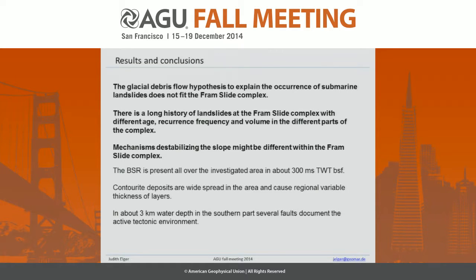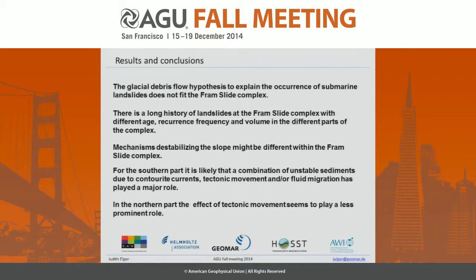Features related to these processes could include the BSR, which is very prominent and could be destabilizing or stabilizing with regard to the gas or gas hydrates. We have contourites, which reveal different sedimentation rates in different parts, and faults at about 3 kilometers depth. So for the southern part we have to consider contourite currents, tectonic movement, and fluid migration. For the northern part, tectonic movement is not as prominent. Thank you very much.